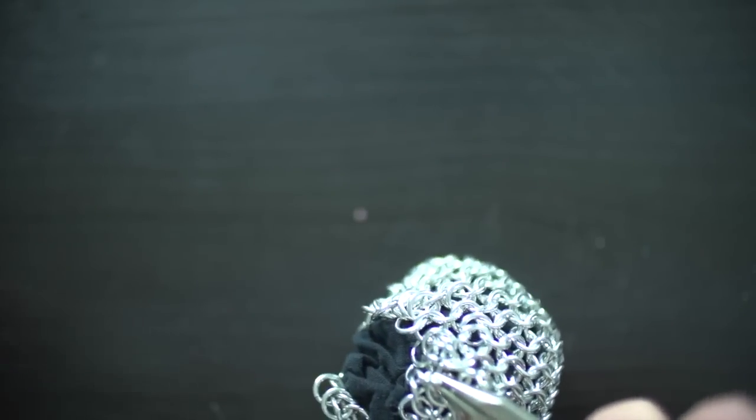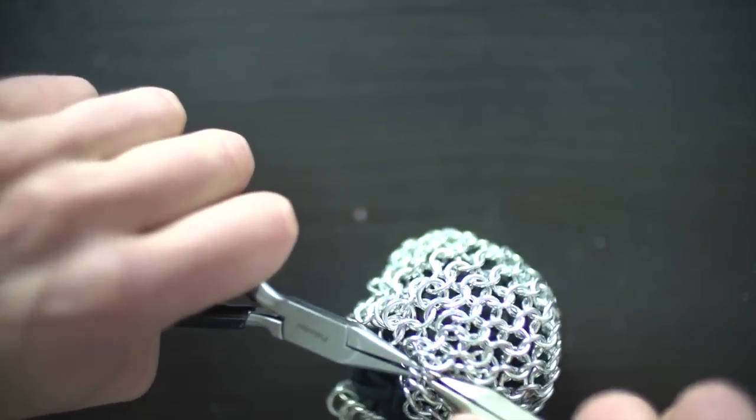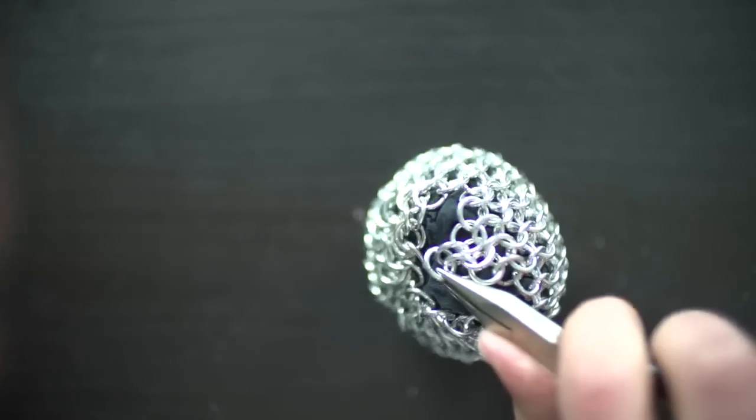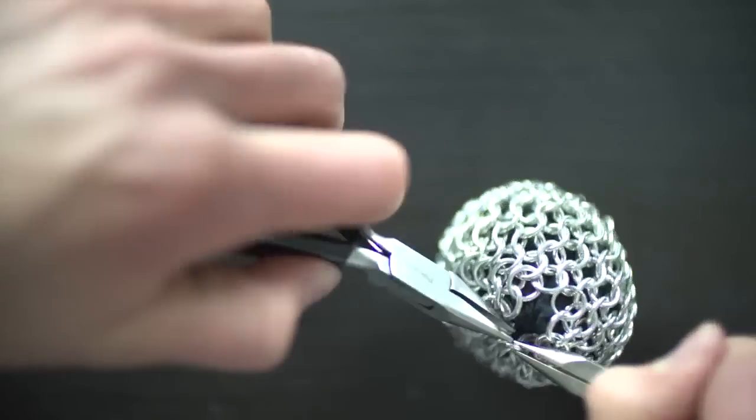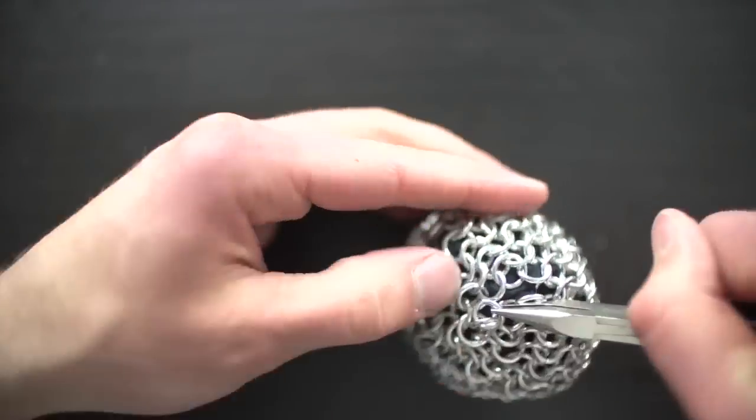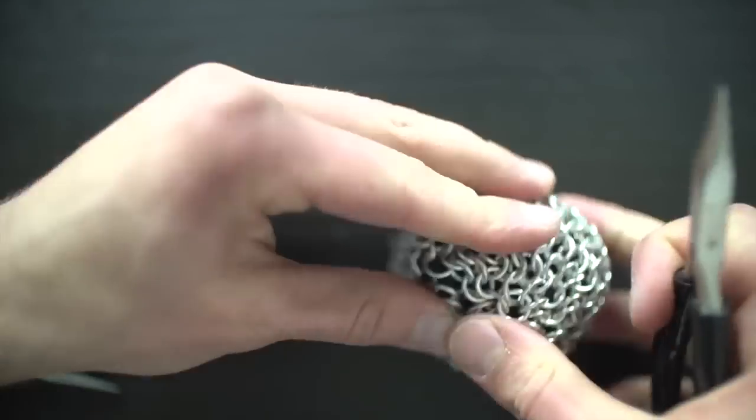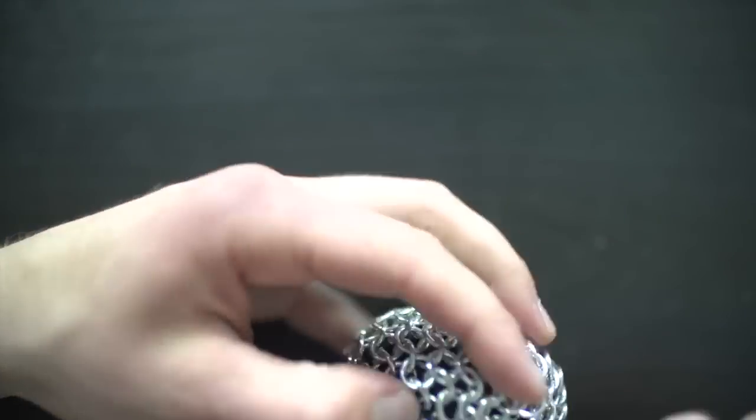Do this to four of them, but when you get to the last pyramid, we're going to do something a bit different. Start by opening the top ring and putting it through the top rings of the four other pyramids. Attach the sides together and you're done!